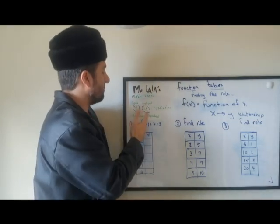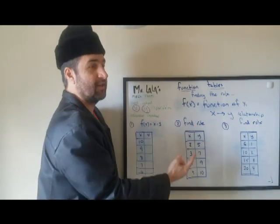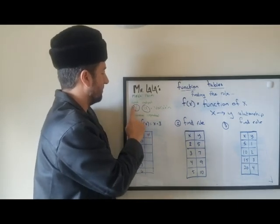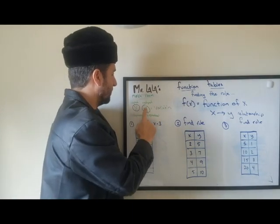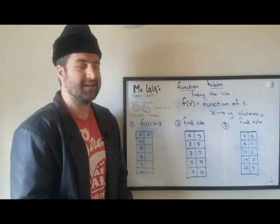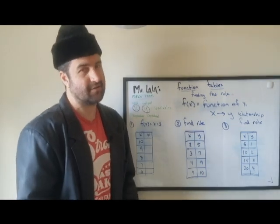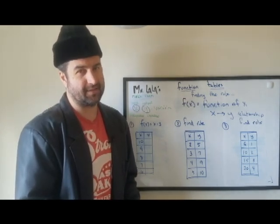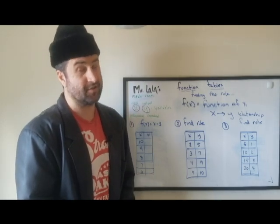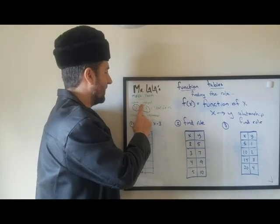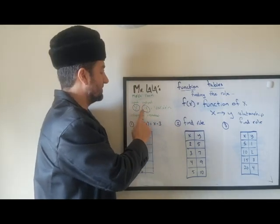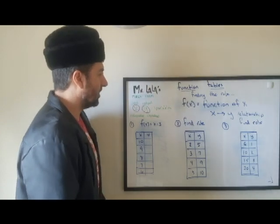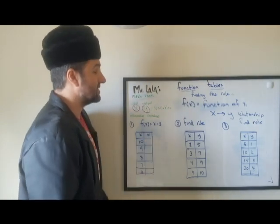X is the independent variable. We change it to test what happens — does boyfriend buy girlfriend a good gift? Is she happy? X is independent, Y is dependent. Output is Y. Y depends on X: does girlfriend cry when she gets a box of potatoes, or is she happy because potatoes are made into french fries? Y is the dependent output. If you put in a dollar, you get something out — it's like a machine.